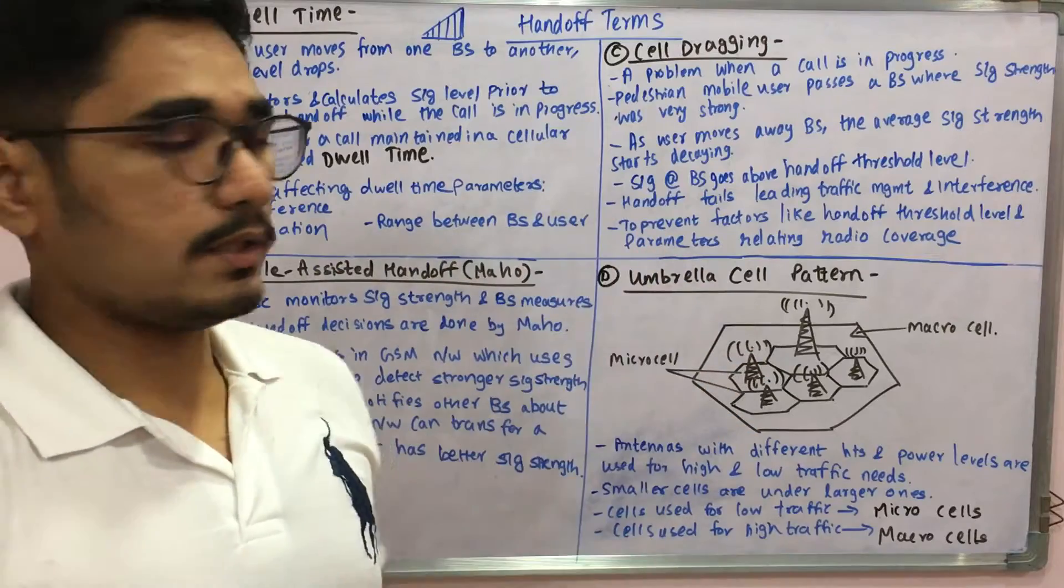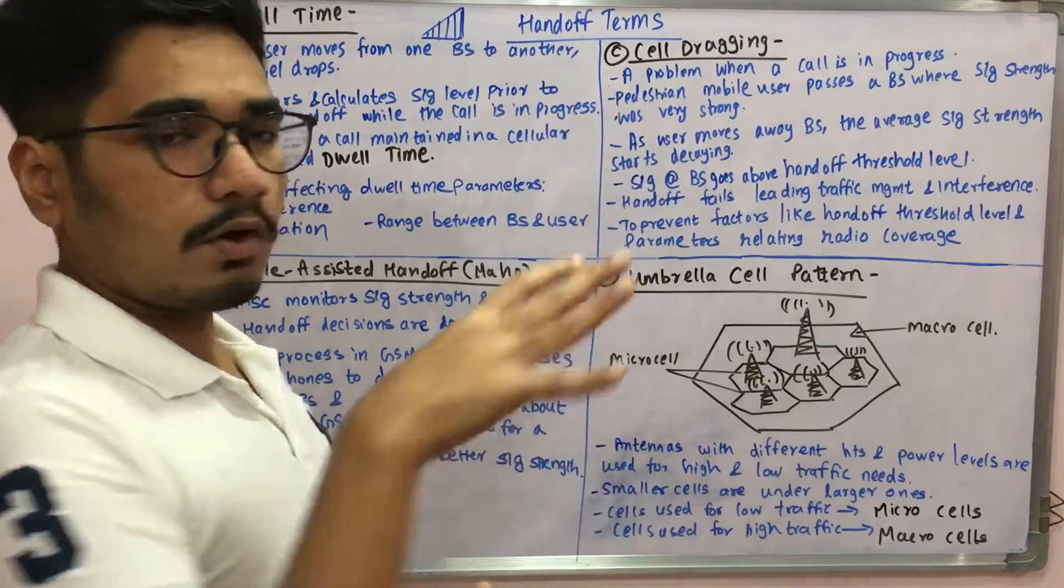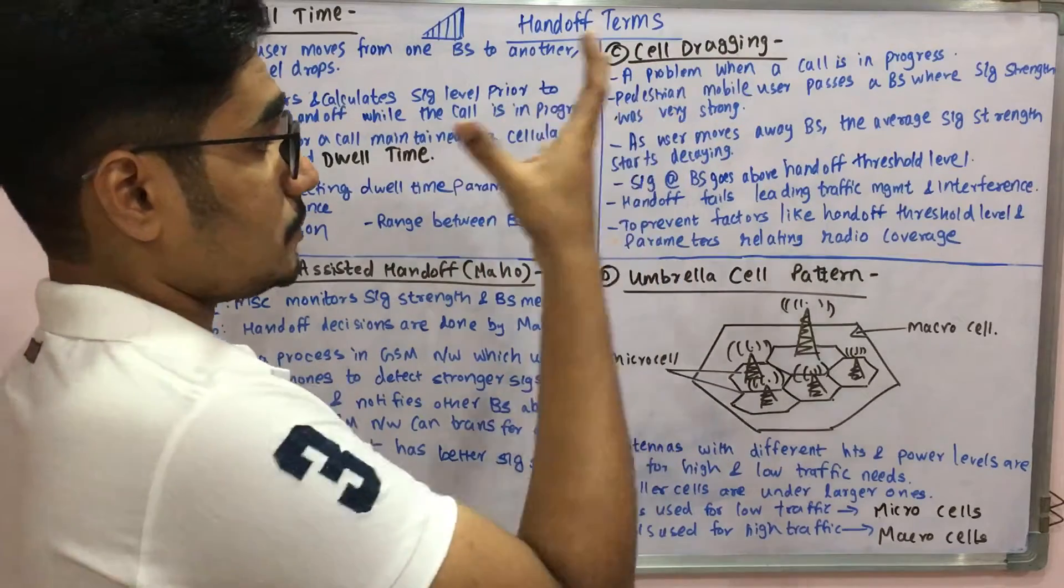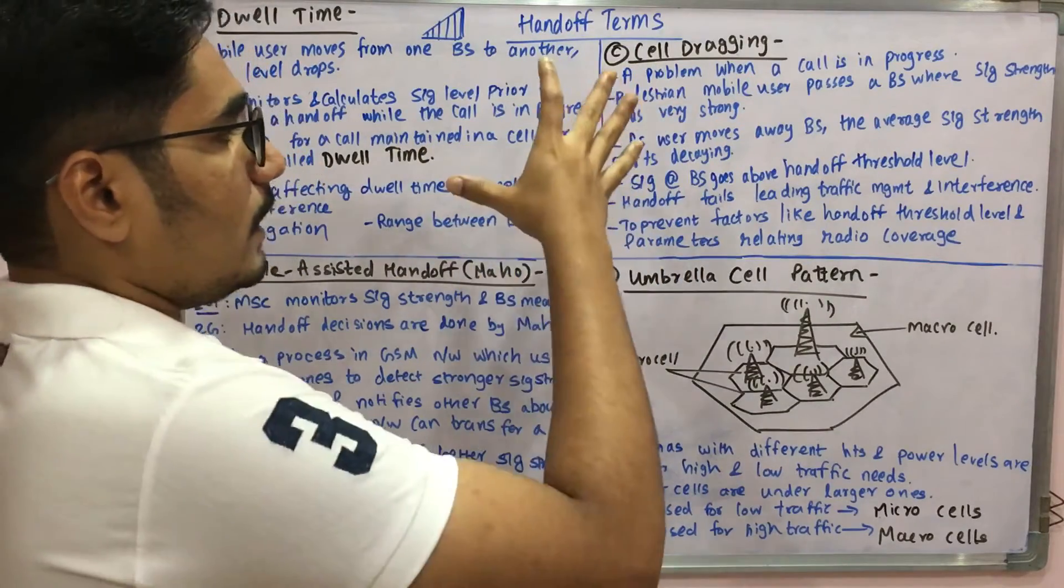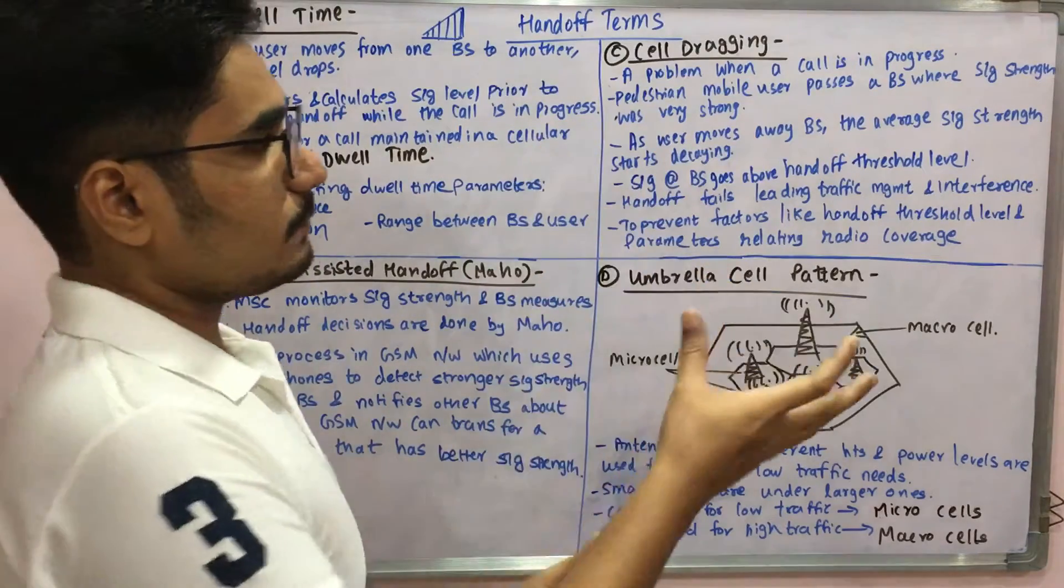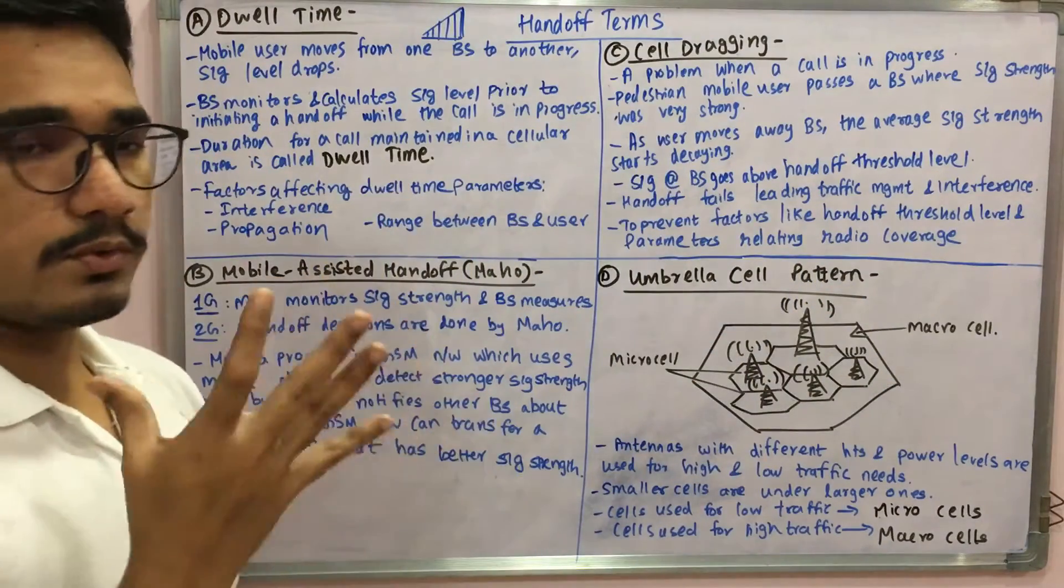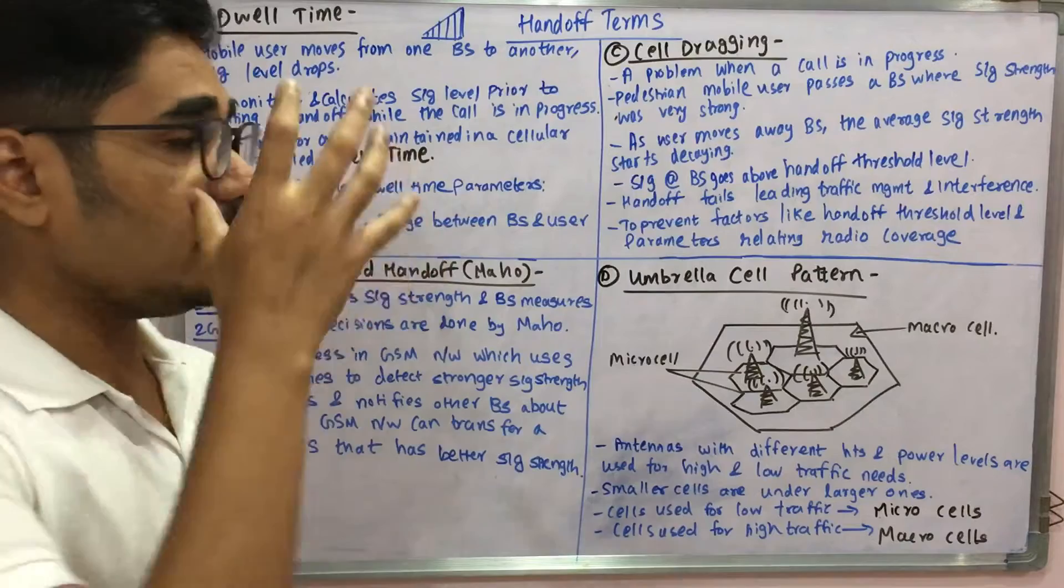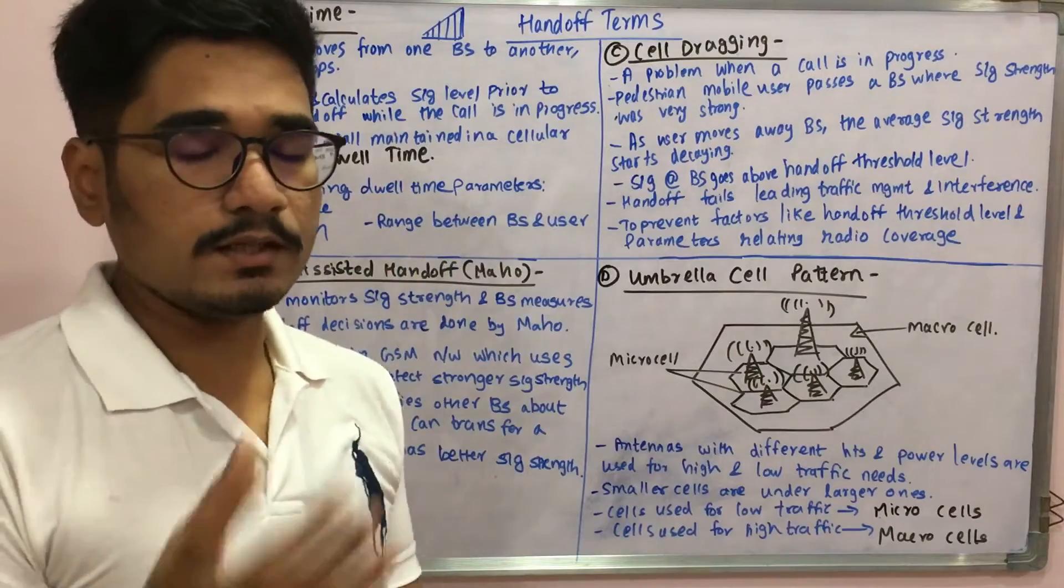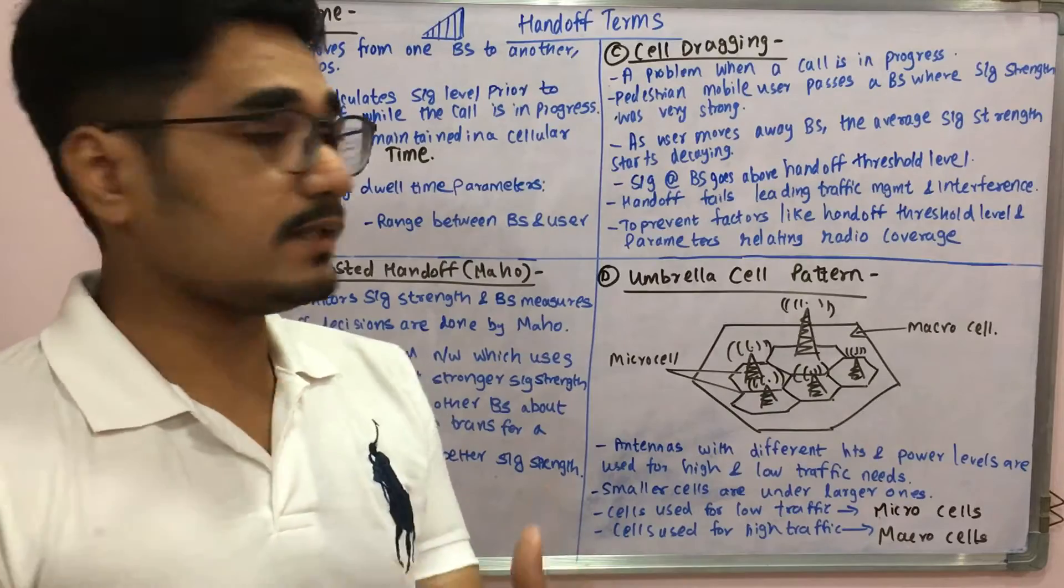Next we move on to the third term: cell dragging. It is a problem when during a call in progress, a pedestrian mobile user passes a base station which is having stronger signal strength, and it gradually degrades to a below threshold level. As a user moves from one base station to another base station, the average signal strength starts decaying. The signal level falls very low, below the handoff threshold level where the handoff could be done. This process is called cell dragging.